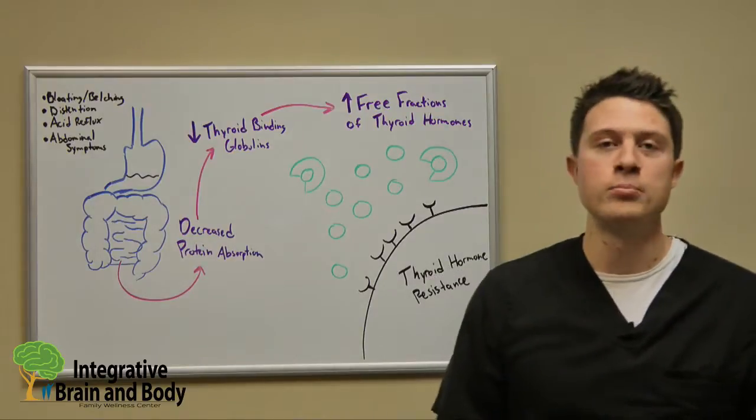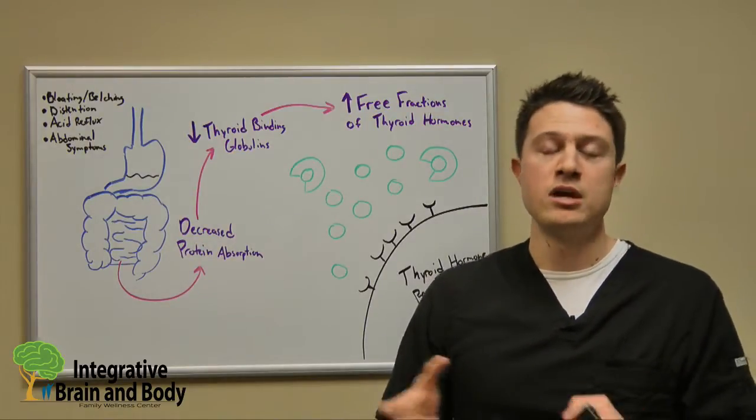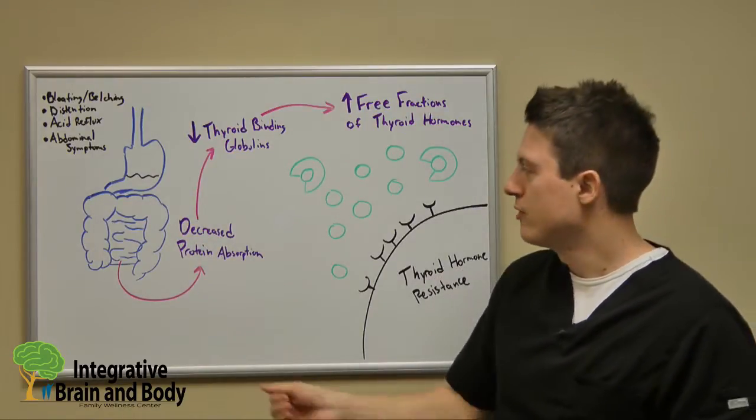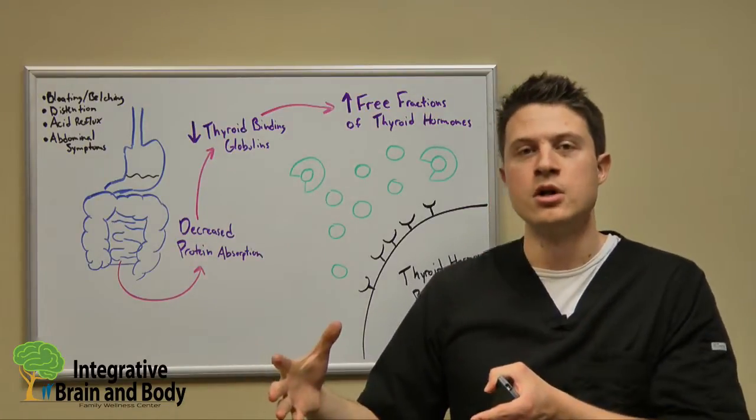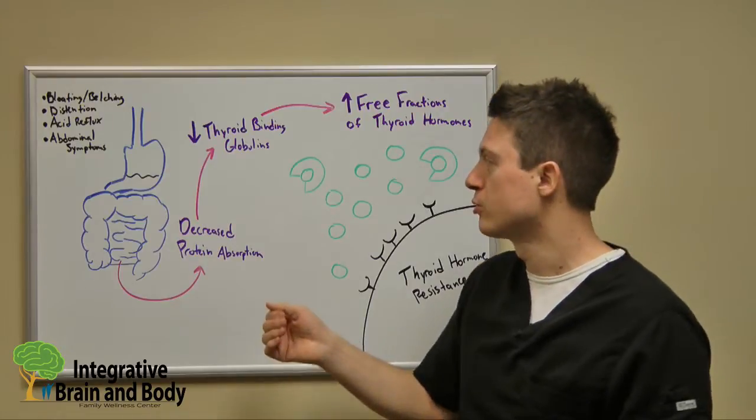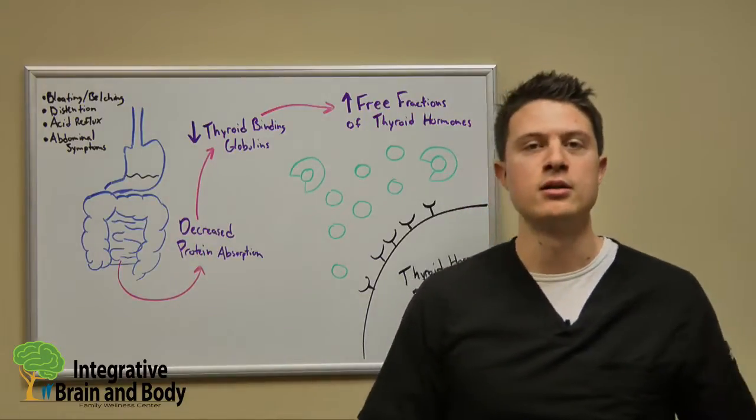So we have these things called thyroid binding globulins, and you guys may have even heard of this before. But if we have a decreased protein absorption and one of those proteins is globulins, overall we may see a decrease in thyroid binding globulin.